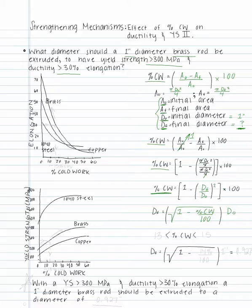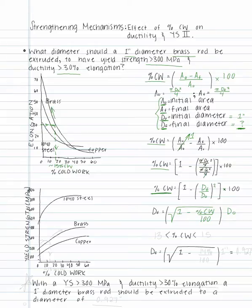Let's begin with the first plot given. We will find 30% elongation and draw a horizontal line over to the brass curve. Then we draw a vertical line down to the percent cold work axis, which gives us approximately 15% cold work. From here, we can see that anything less than 15% cold work gives us greater than 30% elongation.